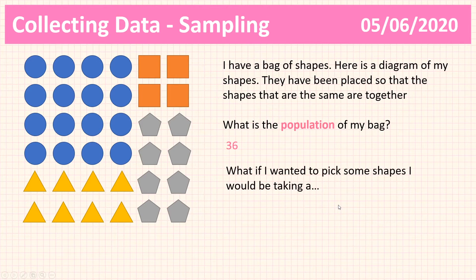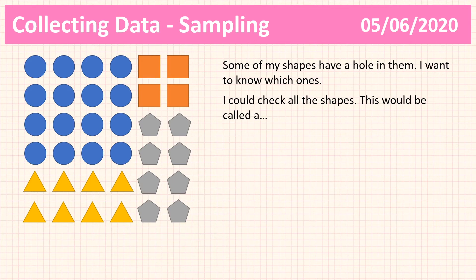So if I was to pick some shapes out of the bag, I would be taking a sample — a sample of the shapes out of my bag. Now, some of my shapes have a hole in them. We'll imagine some slugs have eaten away at some of my shapes. What I want to know is which ones have holes in them. Now if I was to check every single individual shape, I would be taking a census.